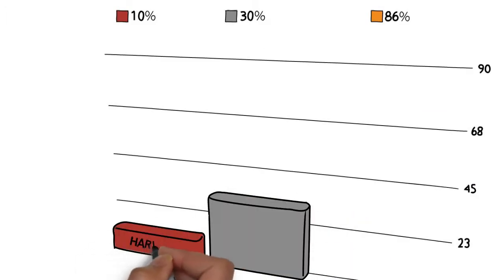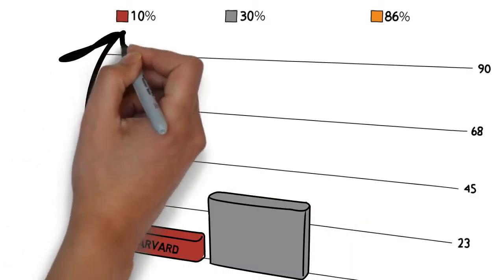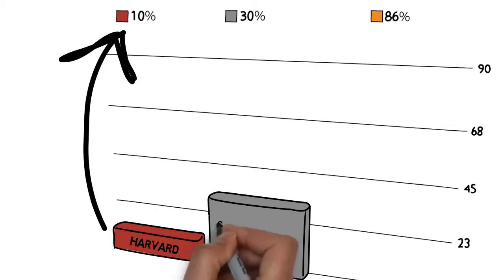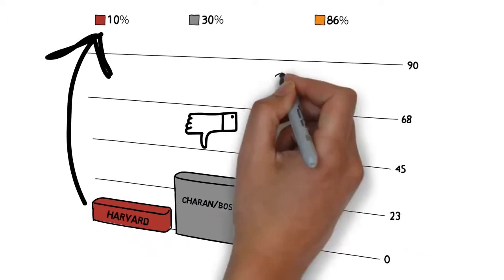This lack of results is illustrated by Harvard research indicating that less than 10% of actions written into a strategic plan are executed, and other research indicating implementation rates as high as 30% are also disappointing.